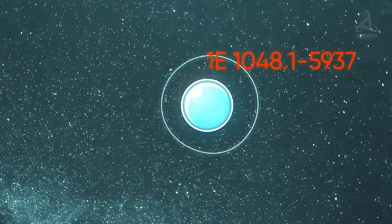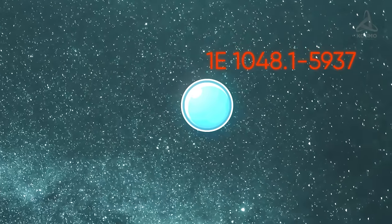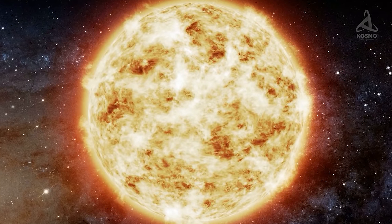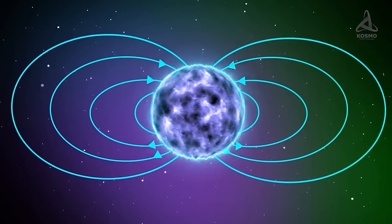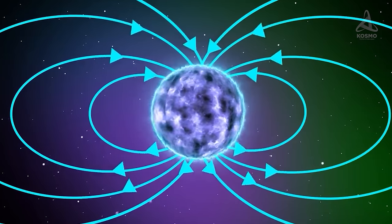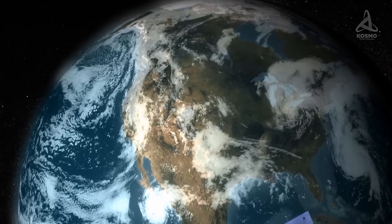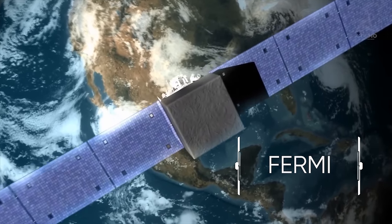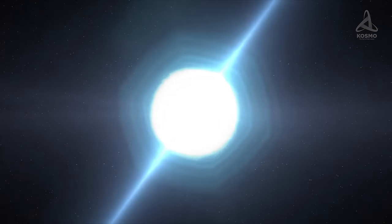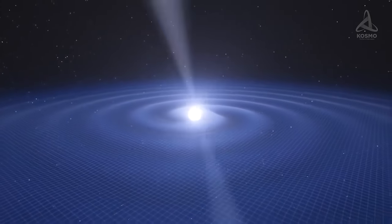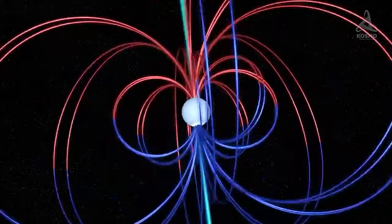For instance, 1E1048.1-5937 is an anomalous X-ray pulsar located 9,000 light-years away in the constellation Carina. The star the magnetar evolved from had the mass 30 to 40 times that of our sun. The matter in these stars is dense to such a point that a fountain pen cap would weigh billions of tons and a human would be torn to bits within a matter of seconds after landing on the star's surface. Several years ago, astronomers from NASA managed to register phenomenon which came to be known as a star quake. Thanks to the Fermi Gamma Ray Space Telescope, scientists received data about intense X-ray bursts. Their source was magnetar SGR J1550-5418.